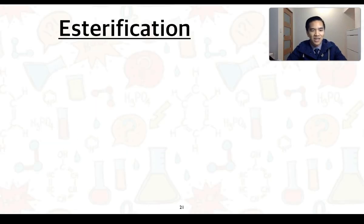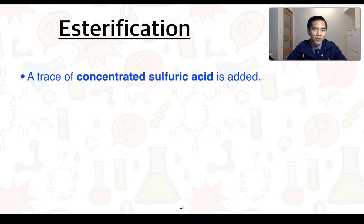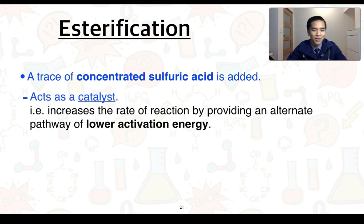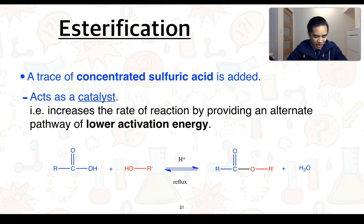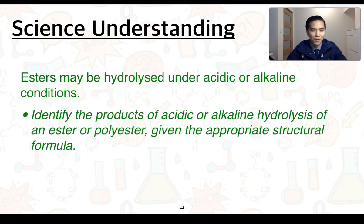A trace of concentrated sulfuric acid is added to the reaction vessel because it acts as a catalyst. We know catalysts help increase the rate of reaction by providing an alternate pathway of lower activation energy. If we look at our equation for the formation of an ester, we show some components above and below the double arrow — H⁺, indicating the concentrated sulfuric acid, and heat or the word reflux to indicate this is occurring under reflux.